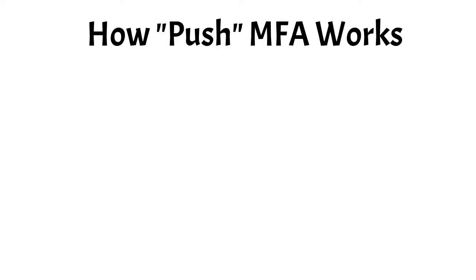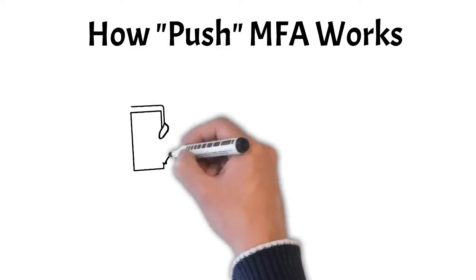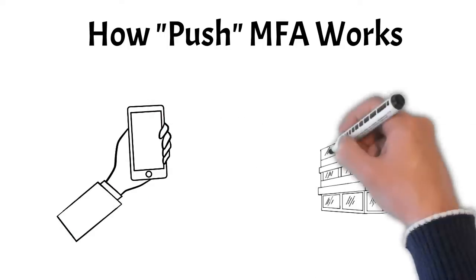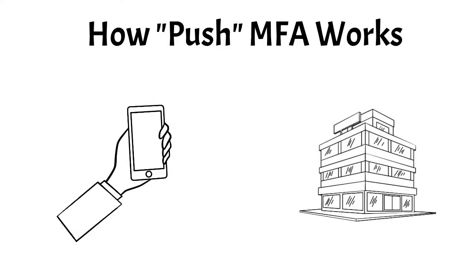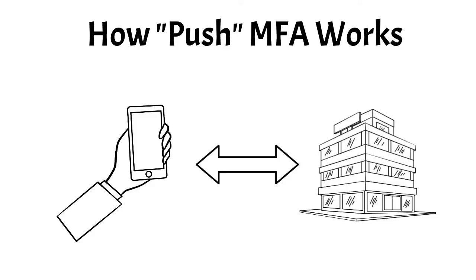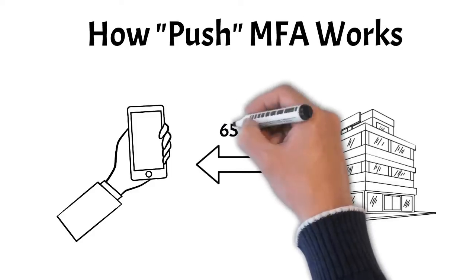Some authenticator apps have a feature where the app can send the code for you. This is called push authentication. When you try to log in, instead of a page appearing asking you to enter in a code, it sends a signal to your phone, and all you need to do is click a notification on your phone and your phone sends the code on your behalf.